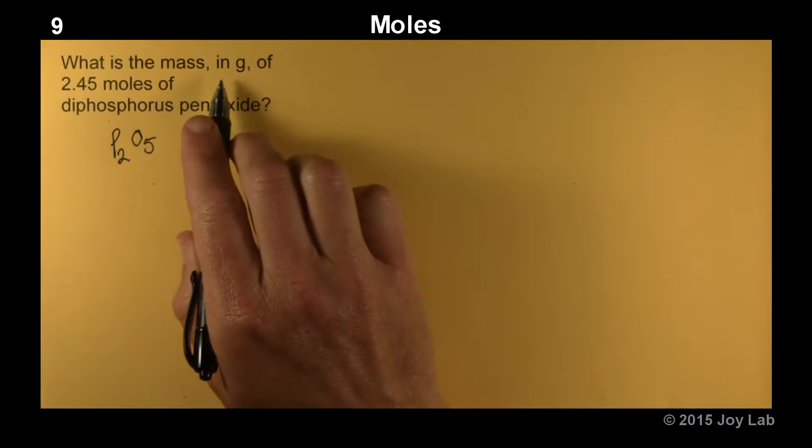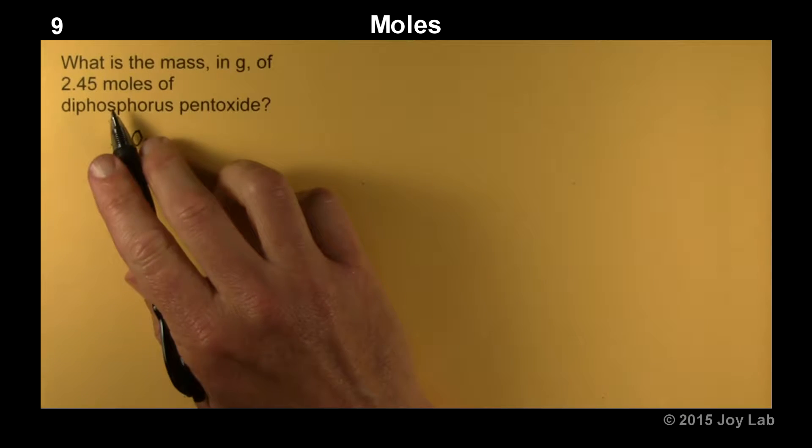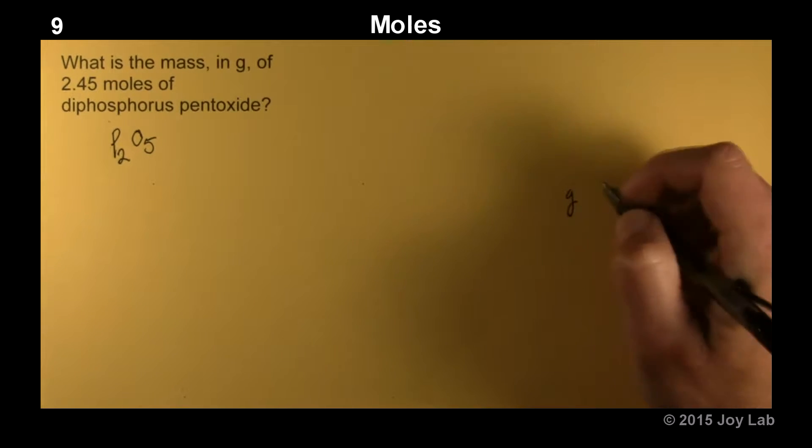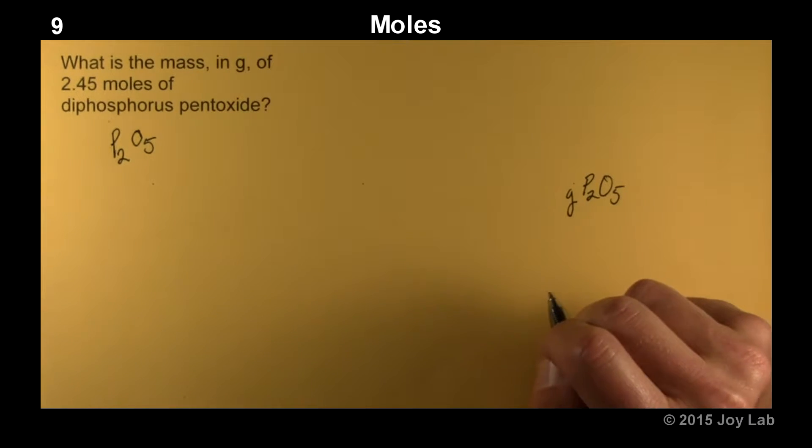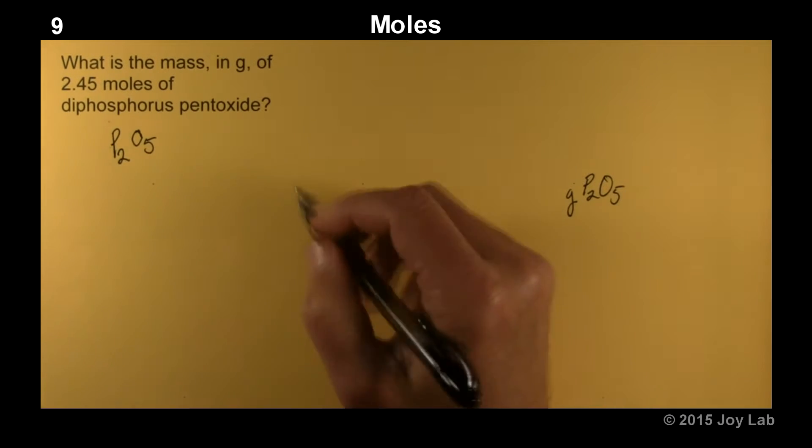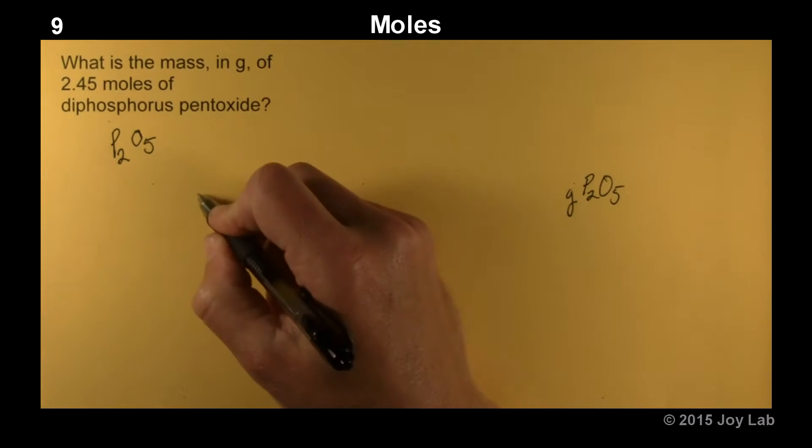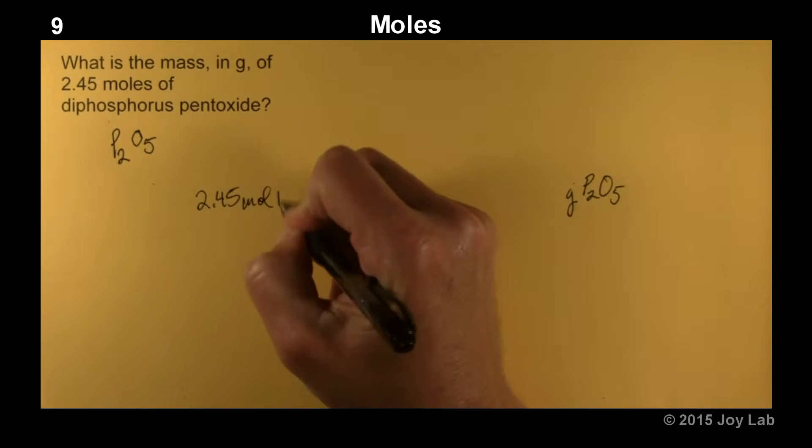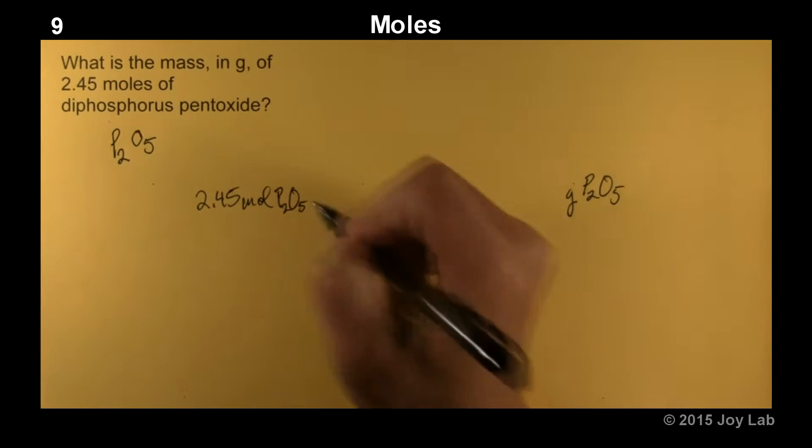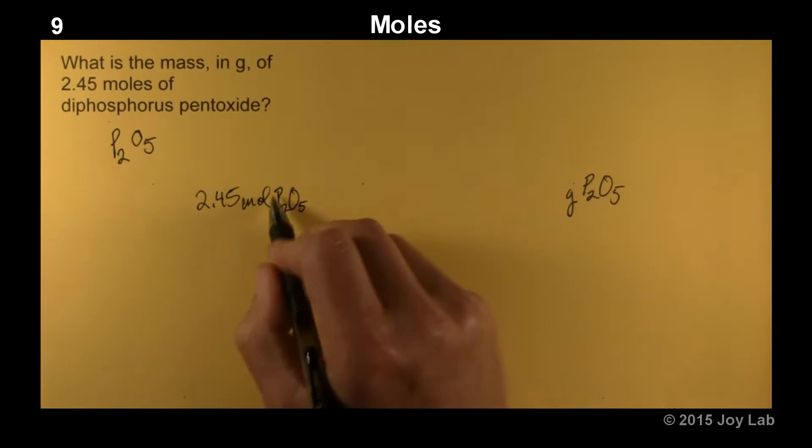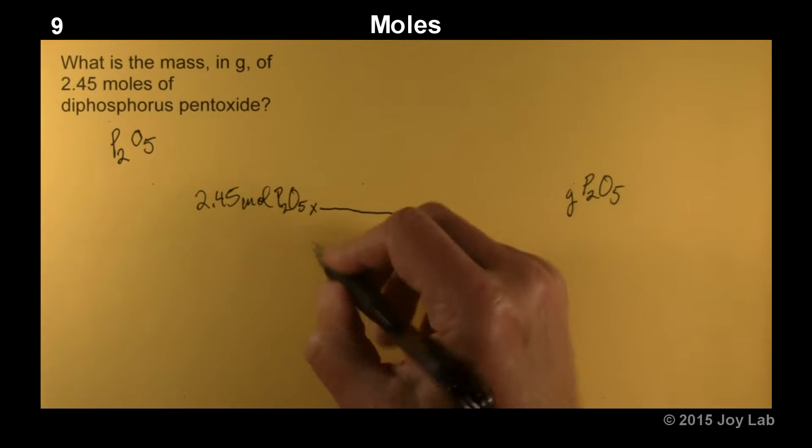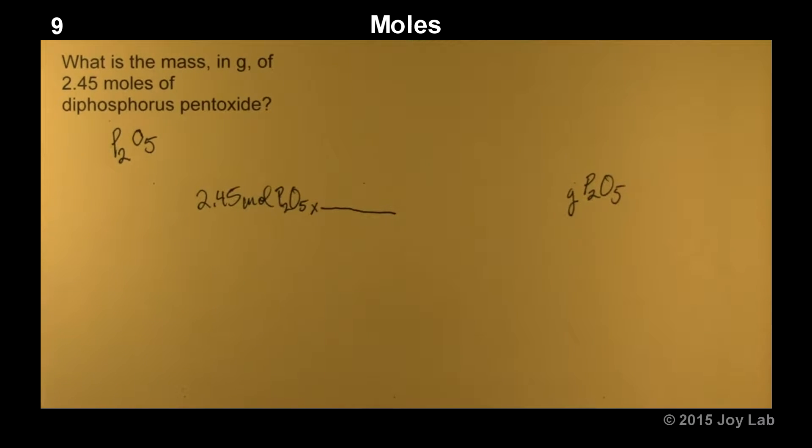We want to find out the mass in grams of 2.45 moles of this. We know that we want grams of P2O5 as the units of our answer. We only have one place to start, which is 2.45 moles of P2O5. We need to figure out the molar mass. It's a one-stepper if we're going to get to grams, so I'm going to look that up.